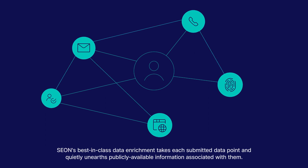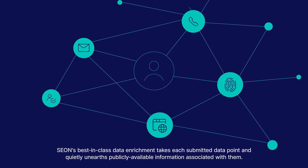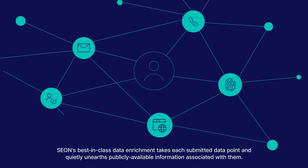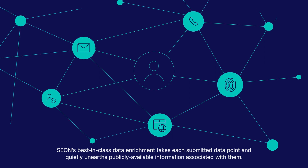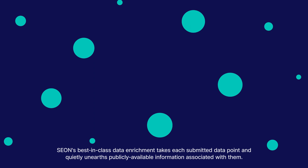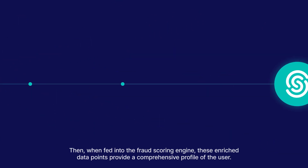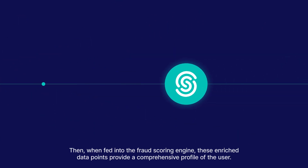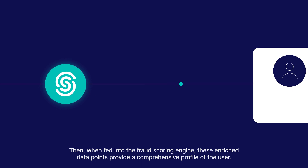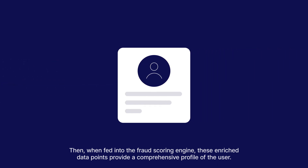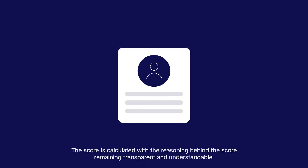Sion's best-in-class data enrichment takes each submitted data point and quietly unearths publicly available information associated with them. Then, when fed into the fraud scoring engine, these enriched data points provide a comprehensive profile of the user. The score is calculated with the reasoning behind the score remaining transparent and understandable.